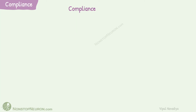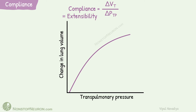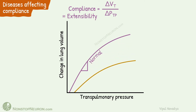First, let's quickly revise what we have seen in the video on compliance. Compliance is a measure of extensibility of lungs — it is change in lung volume per unit change in transpulmonary pressure. We also saw the compliance diagram of the lung, which is a plot of change in lung volume with change in transpulmonary pressure. See how increase in transpulmonary pressure causes increase in lung volume. This is the normal curve. In diseases, it can either decrease or increase — these diseases include pulmonary fibrosis and emphysema.